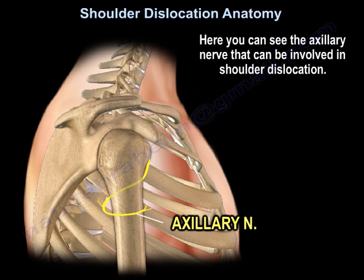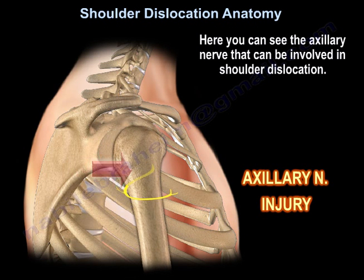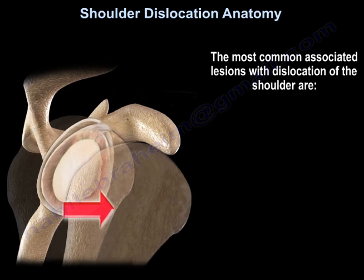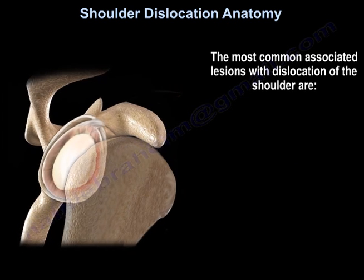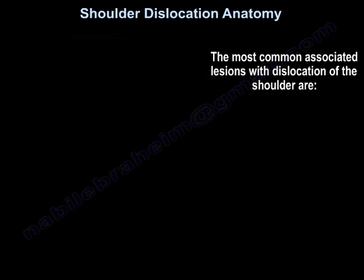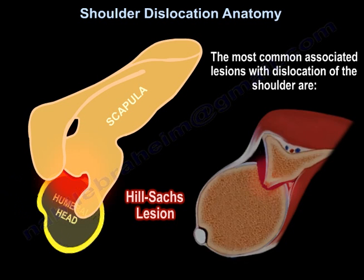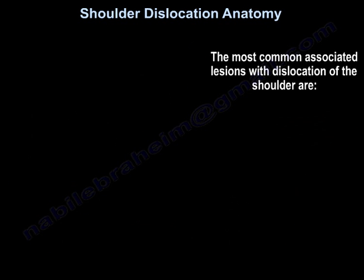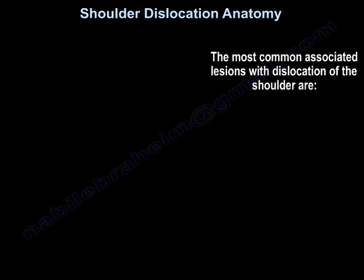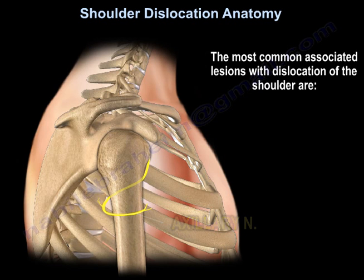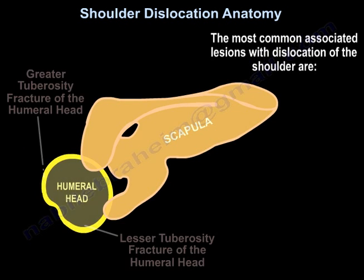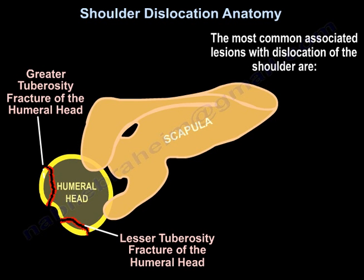Here you can see the axillary nerve that can be involved in shoulder dislocation. The most common associated lesions with dislocation of the shoulder are: Bankart lesion, Hill-Sachs lesion, rotator cuff tear in the elderly, axillary nerve injury, and greater tuberosity or lesser tuberosity fractures.